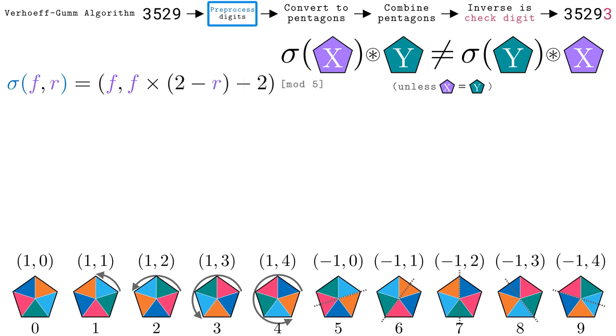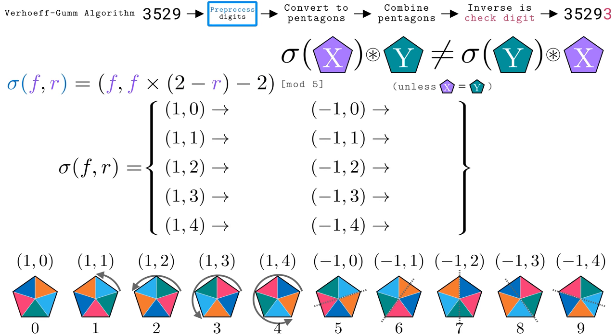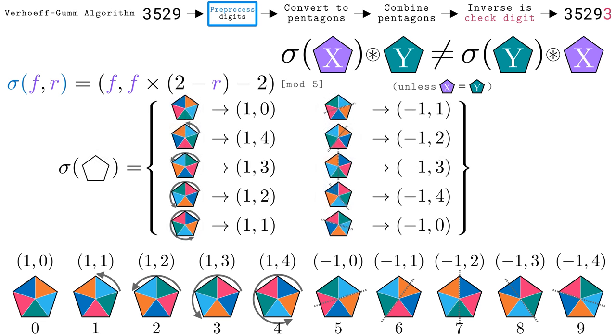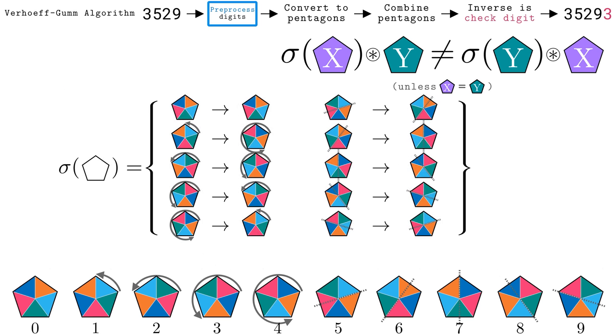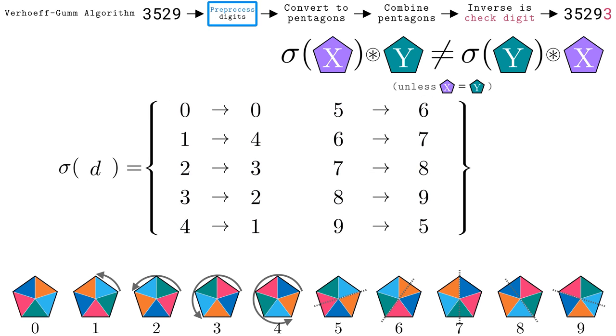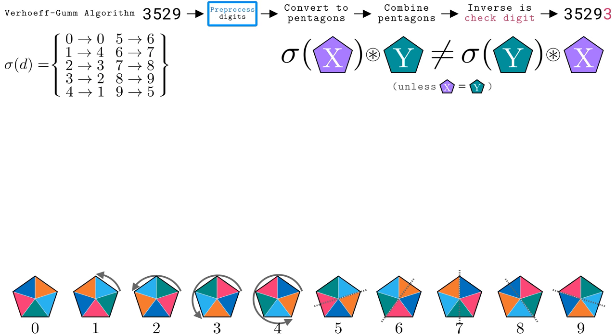I found setting A to 2 and B to negative 2 gives us this nice mapping for the sigma preprocessing function. While the two-number notation was helpful for proving things, let's convert them back to pentagons. Even more compactly, we can convert all the way back to the original digits. Because this sigma function shuffles around the digits, it can be said to permute the digits.